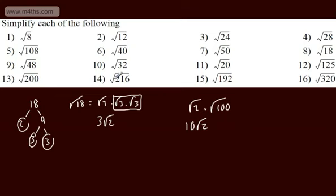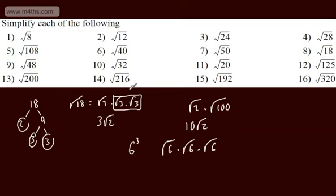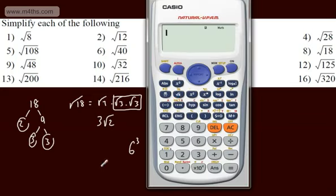For example, the root of 216. If we look at this one, 216 is 6 cubed. So what we're going to have is root 6 multiplied by root 6 multiplied by root 6. This is exactly the same, so we could say that's going to be 6 root 6. You can check these in a calculator, and if you've got a new style one it will convert them straight into surd form. And there's our 6 root 6.